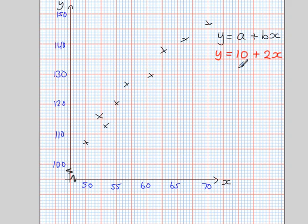The process is simple. Take two values of x, one on the left-hand side, one on the right-hand side. So if I take x equals 50, don't use 0, there's no scale going down to 0, use 50. And choose one on the right-hand side, we could use 70 here.